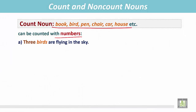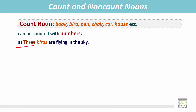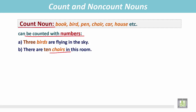For example, three birds are flying in the sky — the birds are counted with the number three. There are ten chairs in this room; the noun 'chairs' is a count noun and can be counted with numbers.